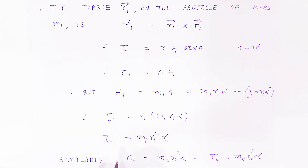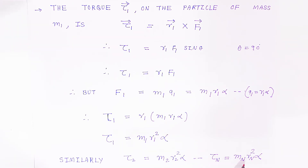Similarly, we can find the torque acting on the second particle: tau2 equals m2 r2 squared alpha. Similarly, we can find the torque acting on the nth particle: tau_n equals mn rn squared alpha.